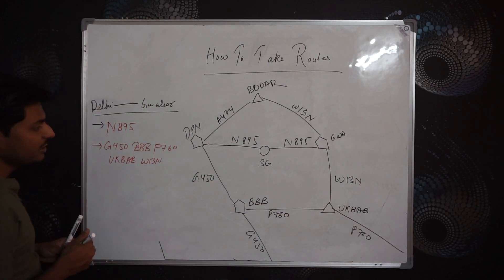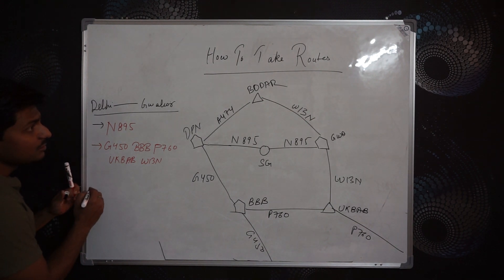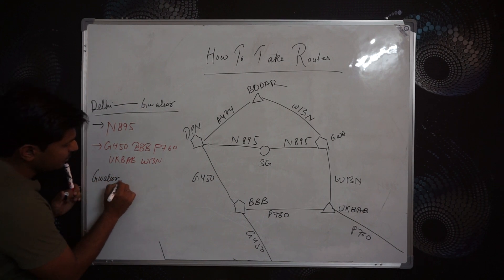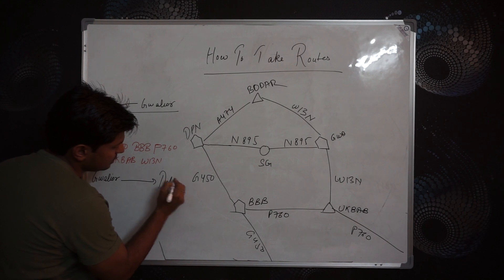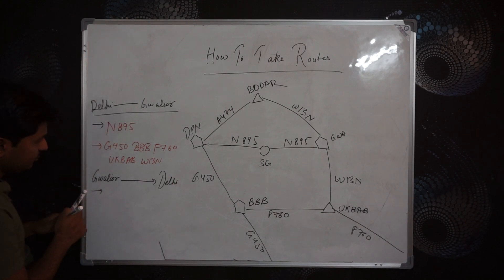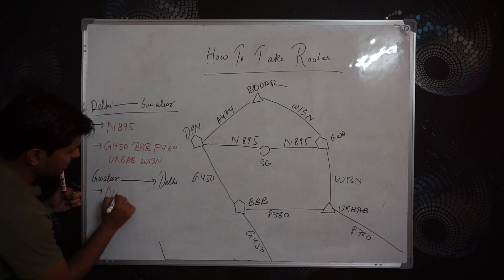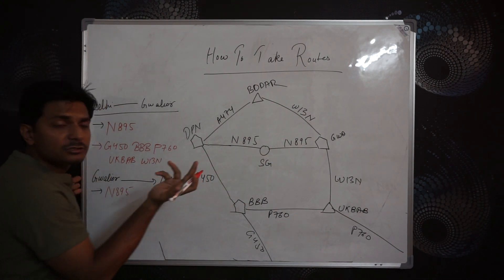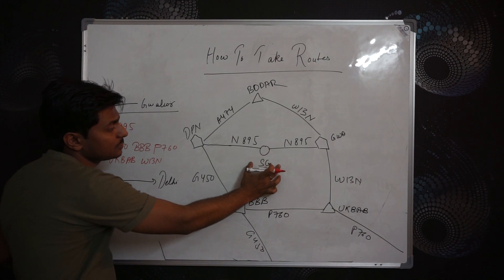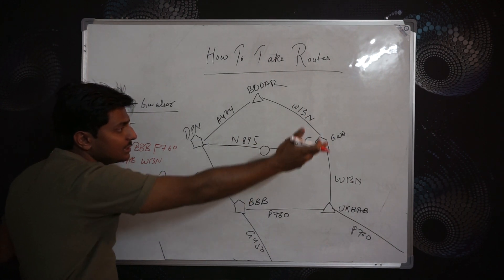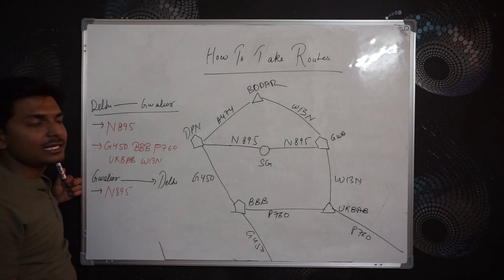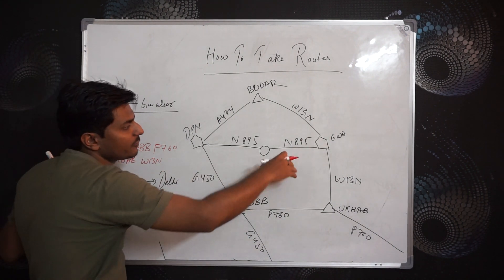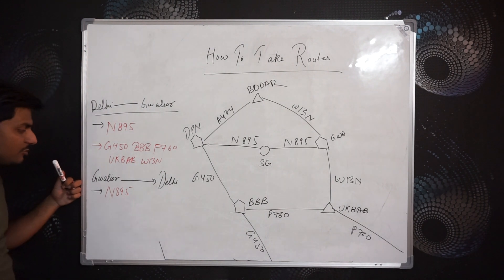Now in the same case, if you are going from Gwalior to Delhi — the first route is the same. You can take November 895. You don't need to mention Sierra Golf because you're taking that route all the way to your destination. If I'm using November 895 up to my destination, no need to say Sierra Golf and then November 895 again. So November 895 alone is sufficient.